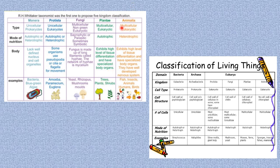Under Animalia, animals are multicellular and eukaryotic. They are heterotrophic in their mode of nutrition. They exhibit a high level of tissue differentiation with specialized body organs and a well-developed nervous system. Examples are fish, insects, animals, humans, and birds.